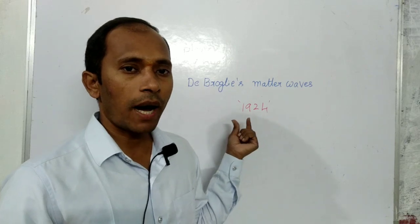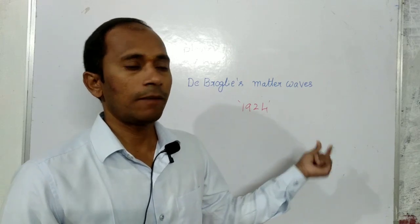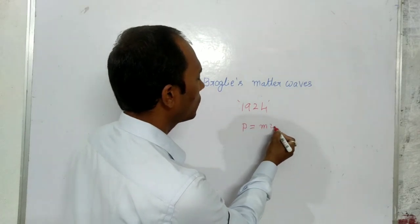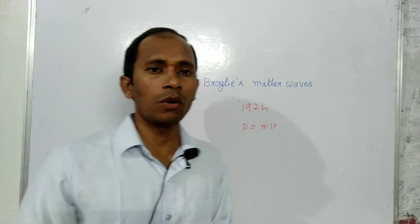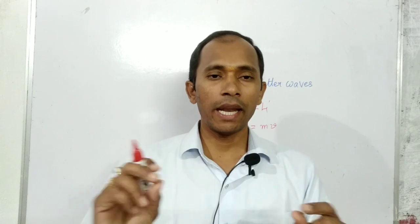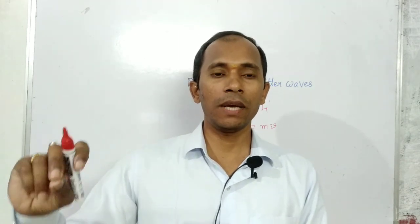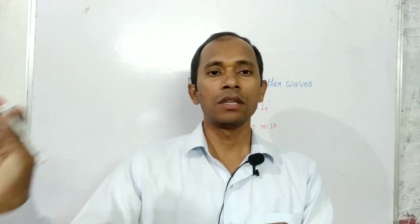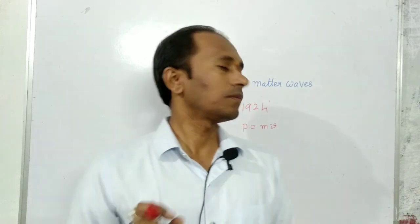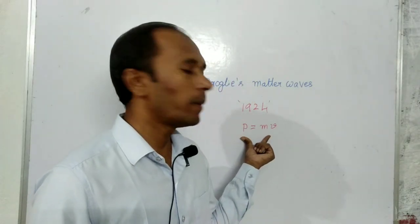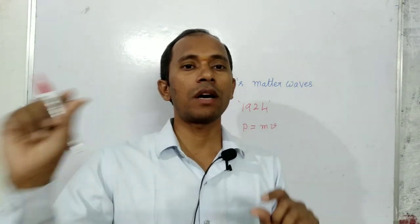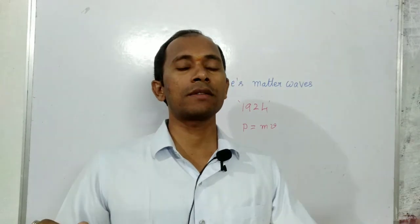In 1924, he said that if a particle is moving with velocity, then there is always some momentum. That means mass into velocity. Any particle definitely has some mass, and as it is moving, mass into velocity gives the momentum. Mass and momentum are characteristic properties of particles.